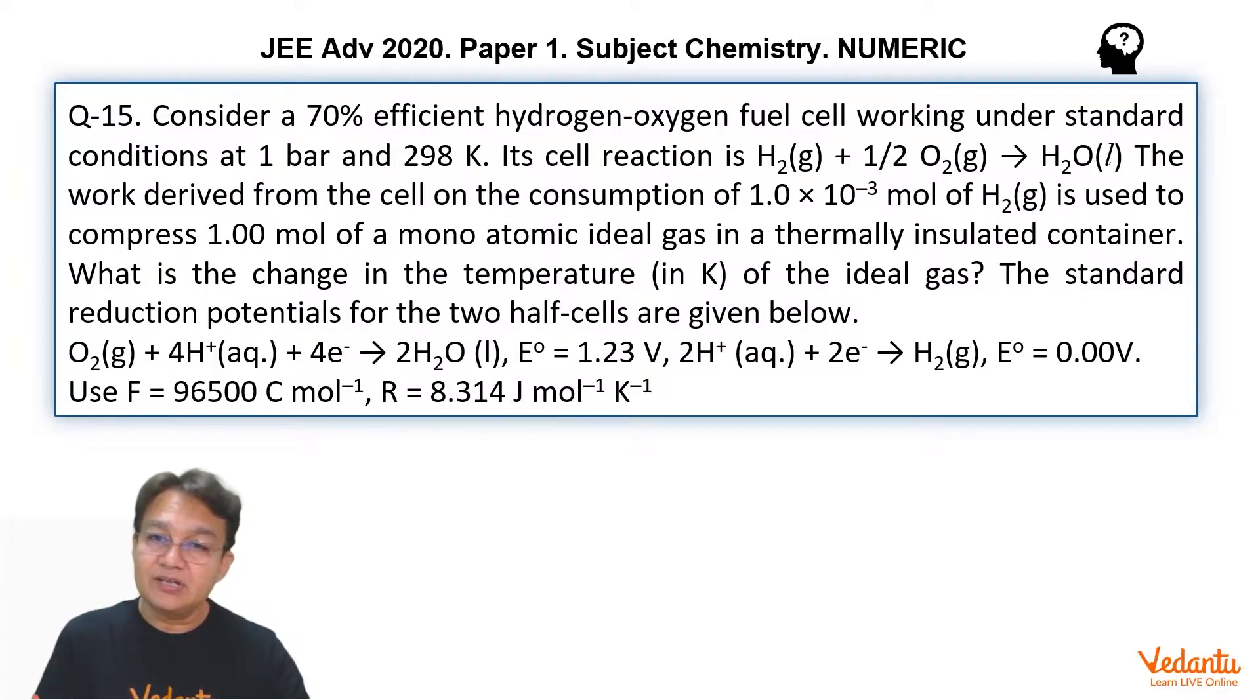Consider a 70% efficient hydrogen-oxygen fuel cell working under standard conditions at 1 bar and 298 Kelvin. This is the fuel cell and the fuel cell reaction is H2 reacting with half O2 and forming H2O liquid. Fuel cell always gives some work so the work derived from this cell on consumption of 10 to the power minus 3 moles of H2 is used to compress 1 mole of a monatomic ideal gas in a thermally insulated container, that means in an adiabatic container.